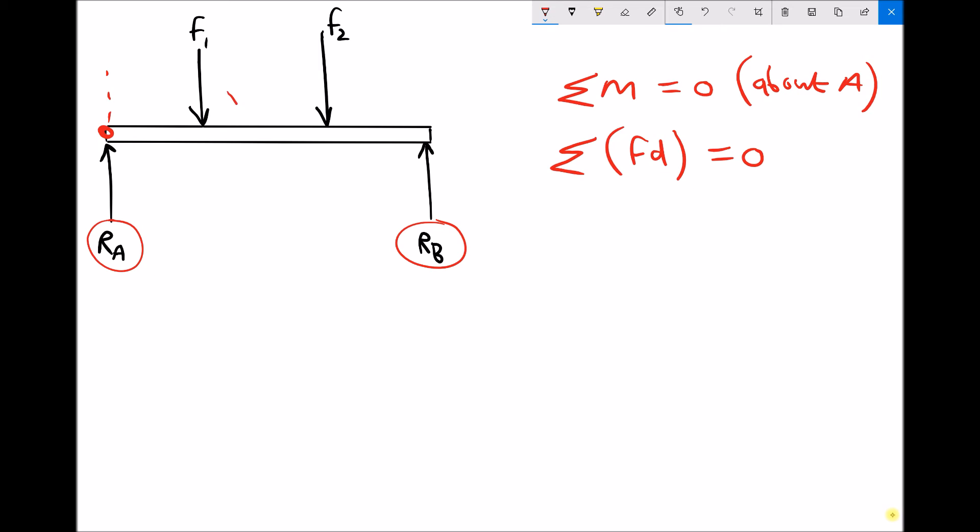We can then see that F1 is trying to turn the beam clockwise about the pivot. Force 2 is trying to turn the beam clockwise about the pivot. And the reaction at B is trying to turn the beam anti-clockwise. What we'll end up with is one equation with one unknown, and that unknown will be Rb. So that is the first step in solving these problems.